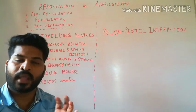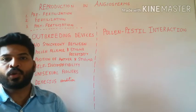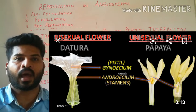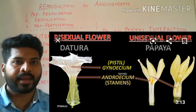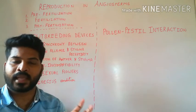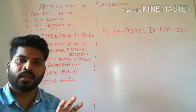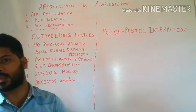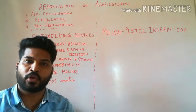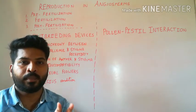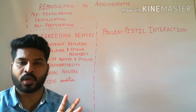When the pollen grain lands on the stigma, we know that there are two types of flowers: unisexual flowers, which contain either the stamens or pistil, or bisexual flowers, which contain both stamen and pistil in the same flower. In the case of bisexual flowers, there is autogamy or self-pollination. The issue with self-pollination is that continued self-pollination results in inbreeding depression — loss of productivity and loss of fertility. Flowering plants have developed certain mechanisms to prevent autogamy.